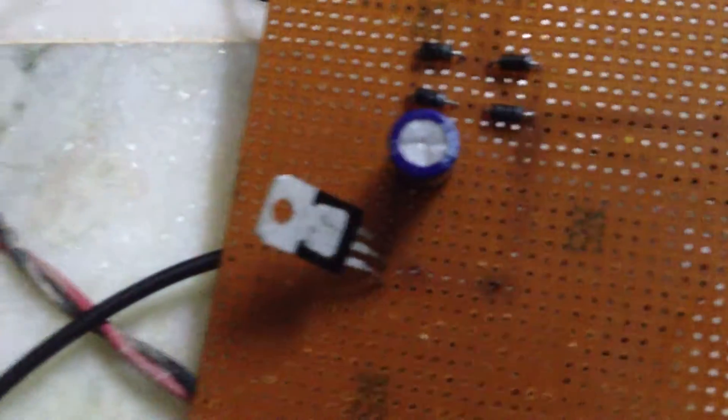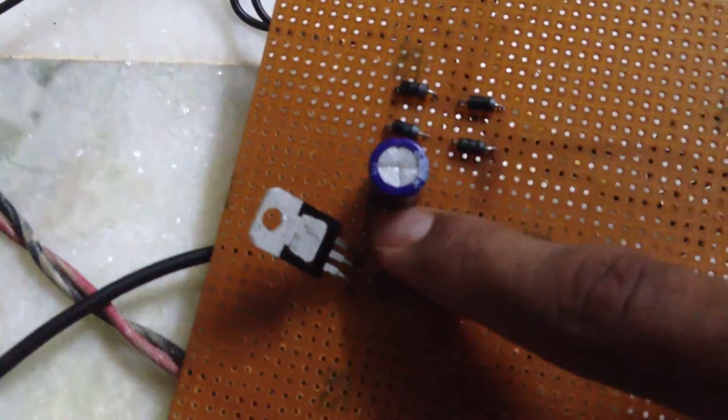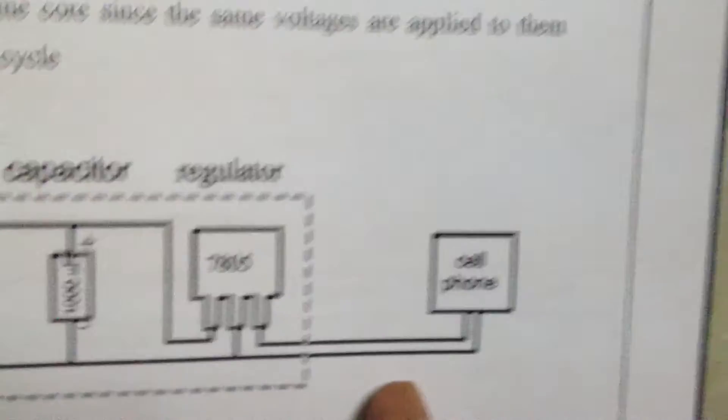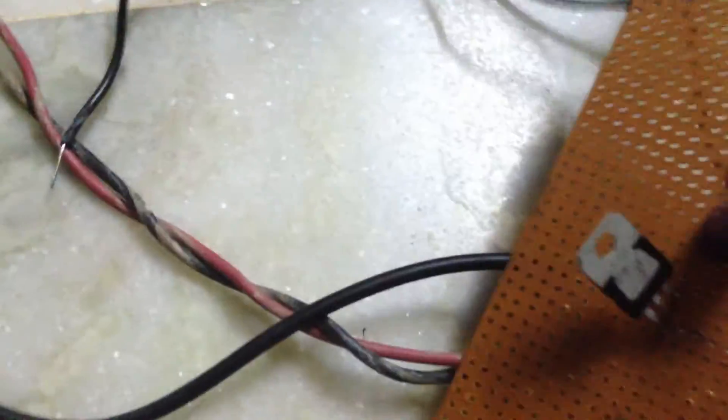So the first pin, here it is first pin, is connected to capacitor and the output is given to cell phone. Now this is the output of cell phone, here it is.